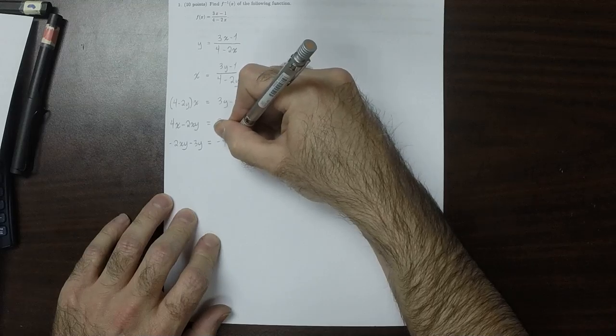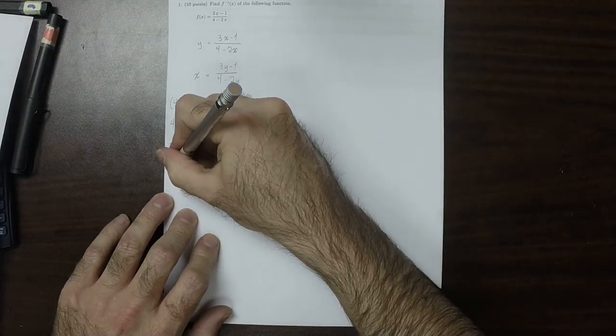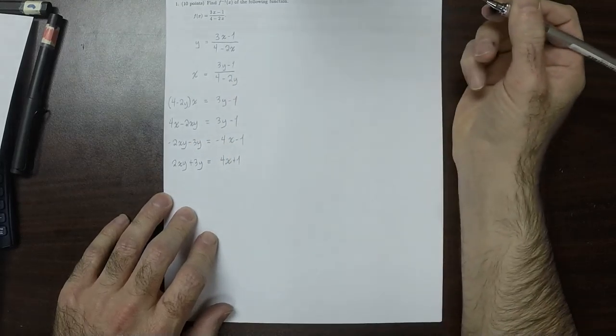So negative 2xy minus 3y equals negative 4x minus 1. I'll multiply through by negative 1, so I get 2xy plus 3y equals 4x plus 1.